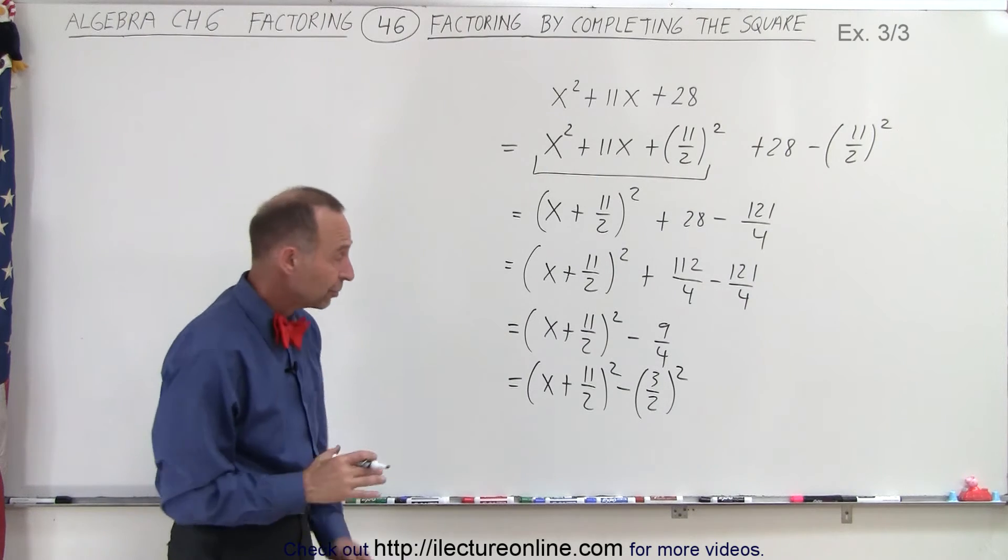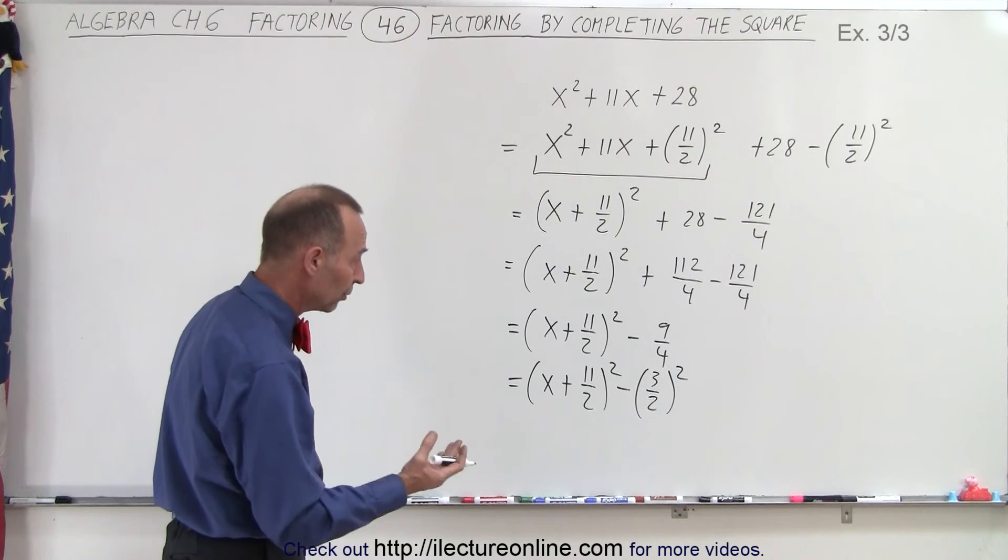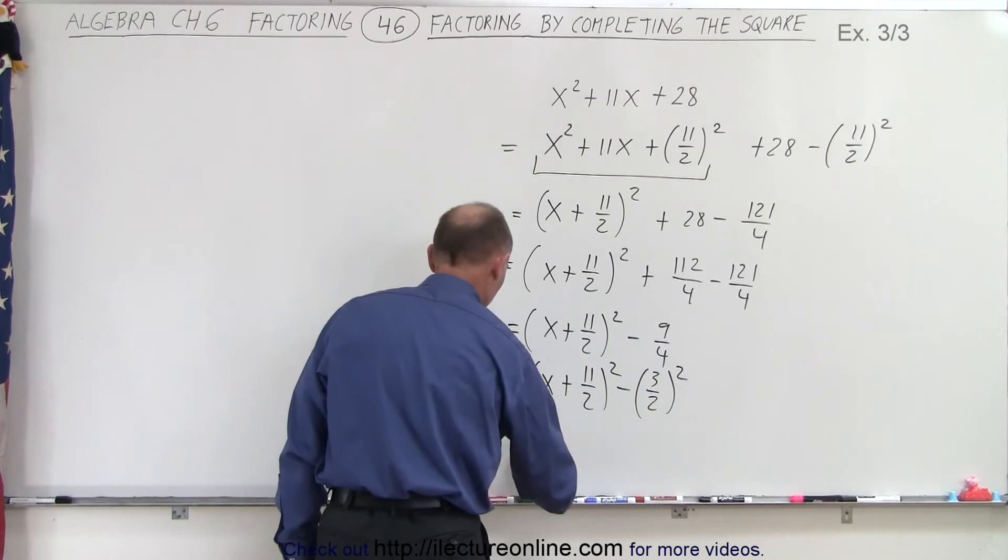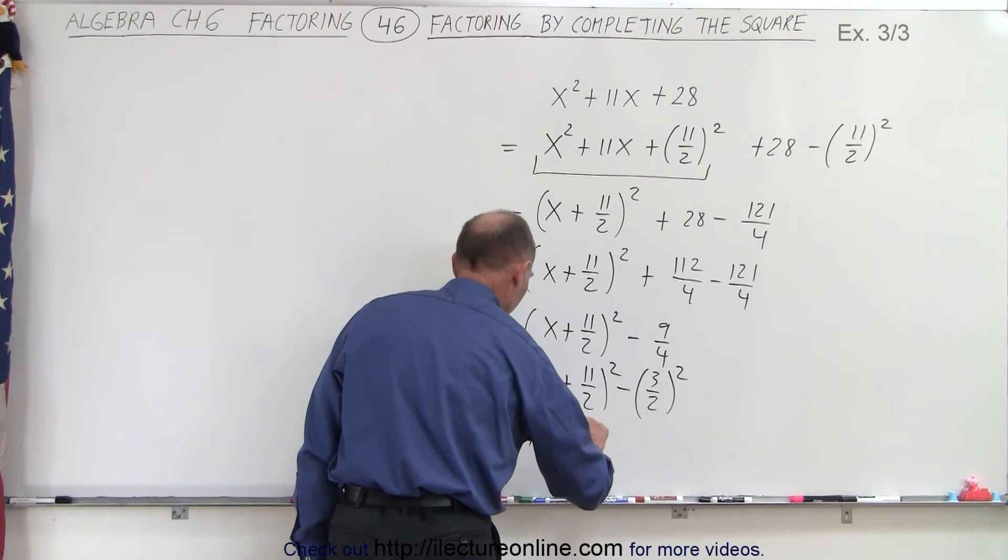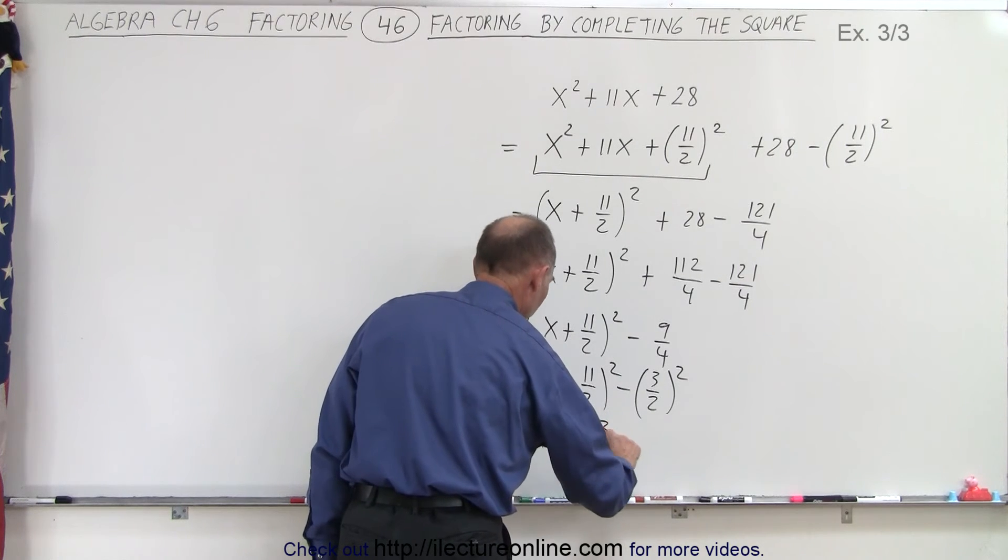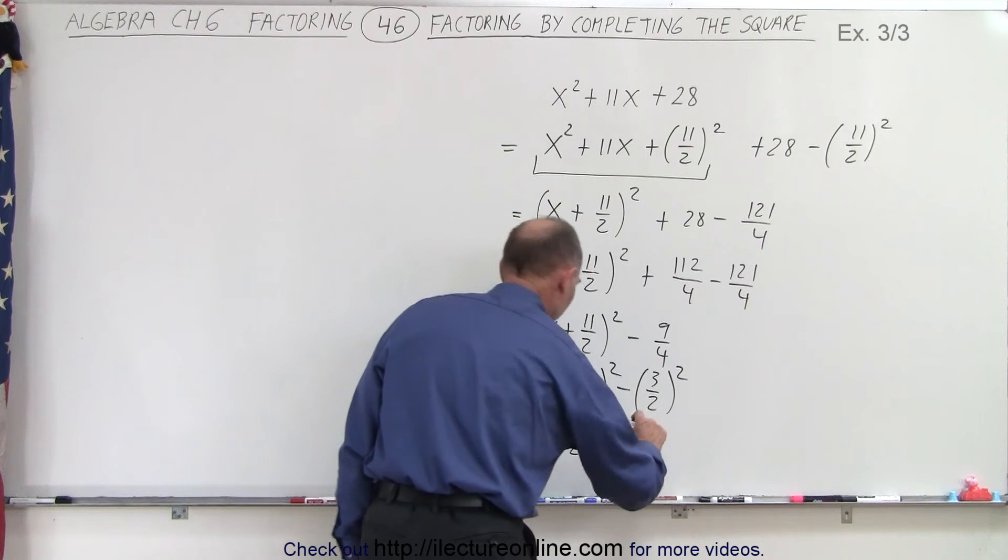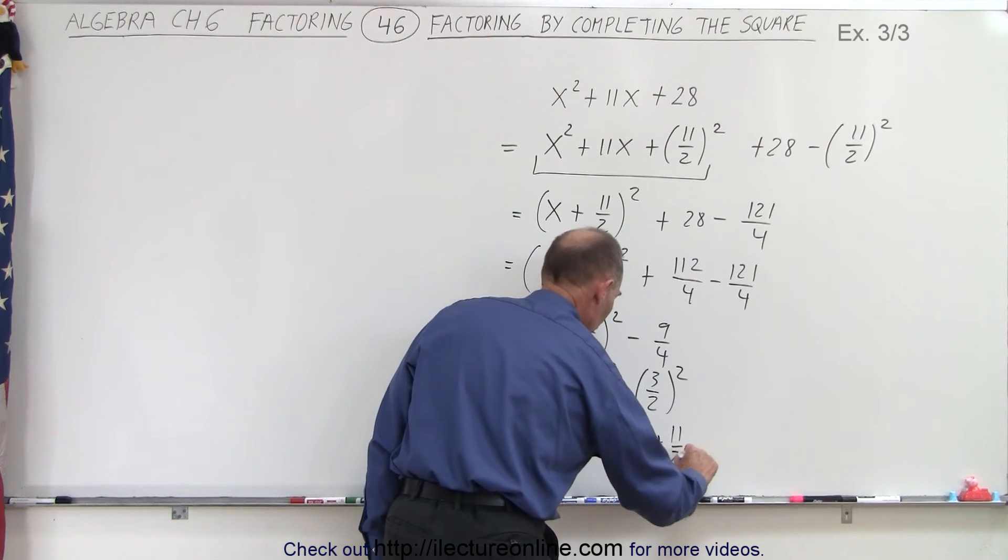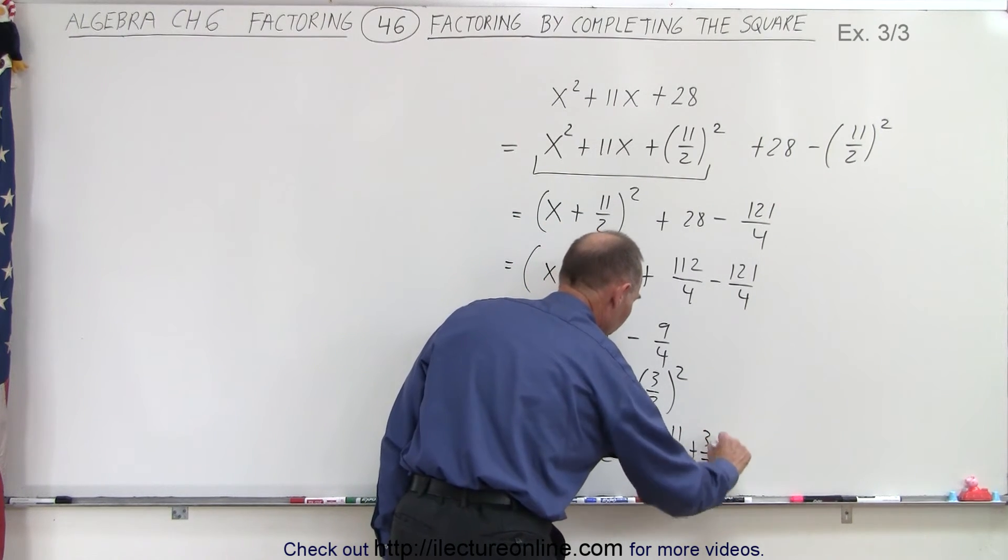Now you realize that you have the difference of squares, which could be factored as follows. So this is equal to x plus 11 over 2 minus 3 over 2 multiplied times x plus 11 over 2 plus 3 over 2.